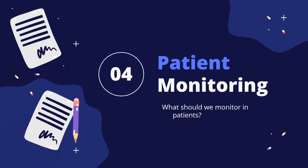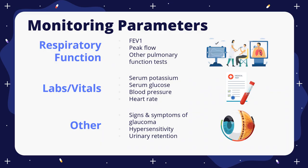Next, we have patient monitoring. What should we monitor in patients? When a patient is on Anoro Ellipta, measure respiratory function with FEV1, peak flow, and other pulmonary function tests. FEV1 is forced expiratory volume in one second — how much air can the patient force out of their lungs in one second — and gauges how severe the patient's COPD is.